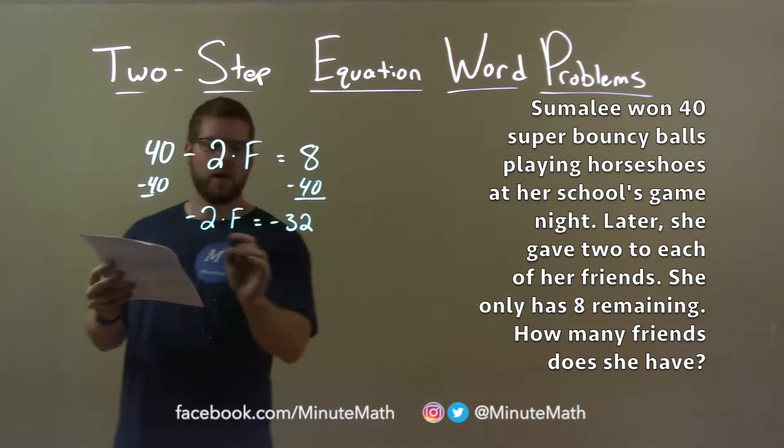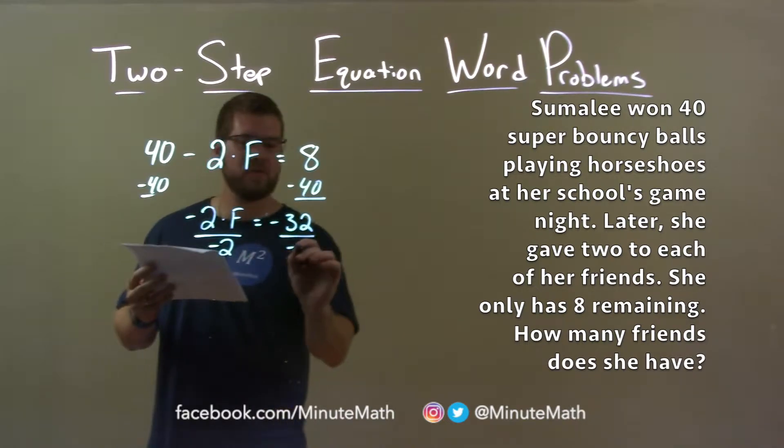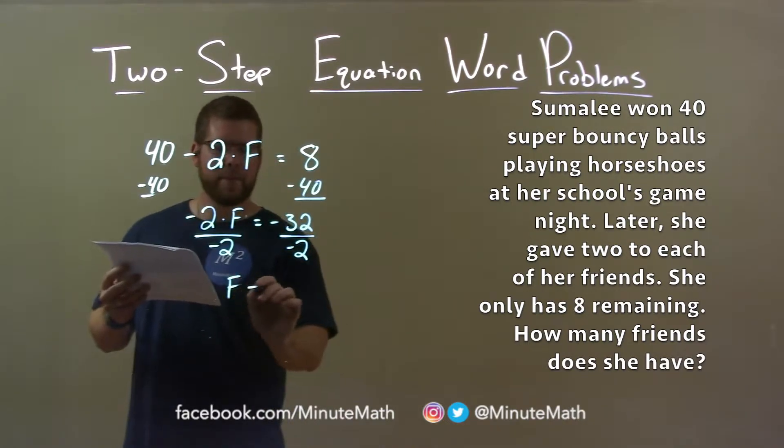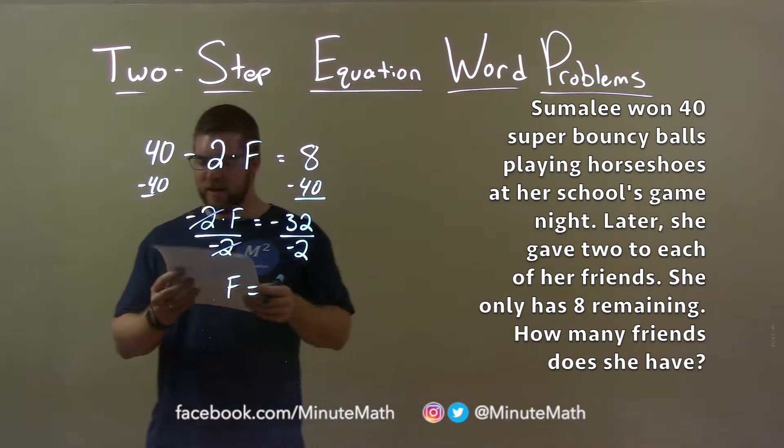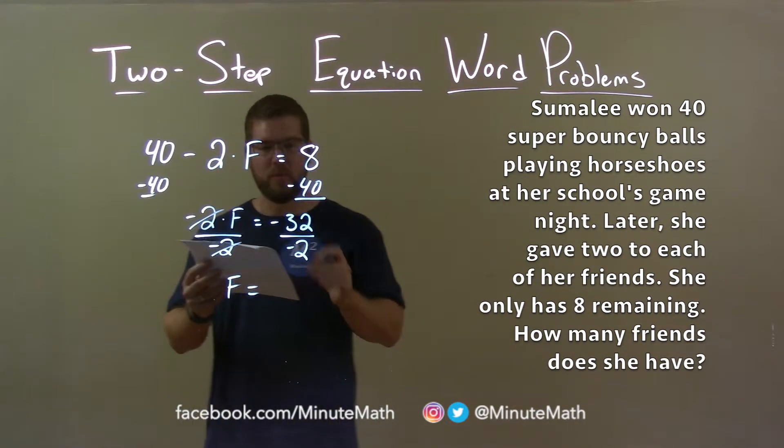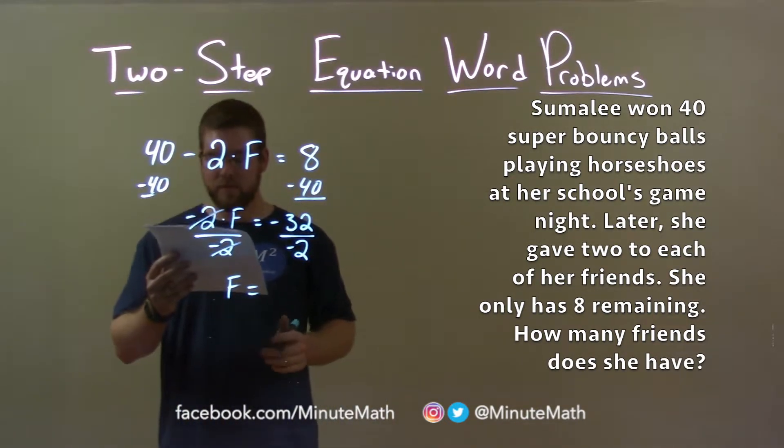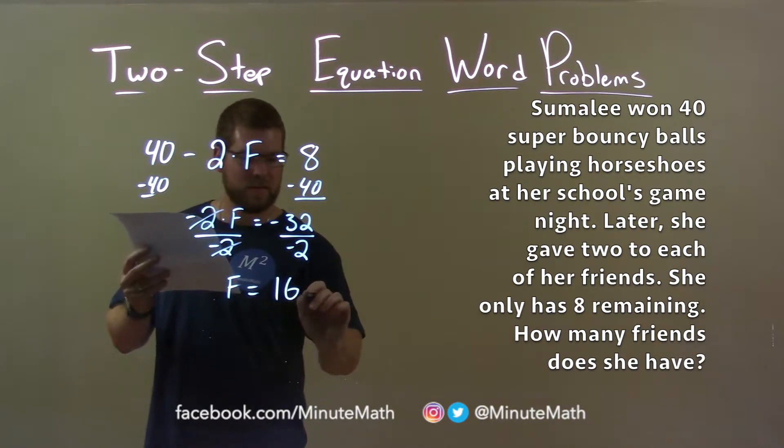Then, from there, I divide both sides by negative two, and that gives me f by itself, meaning the number of friends that Sumalee has, and negative 32 divided by negative two is a positive 16, 16 friends.